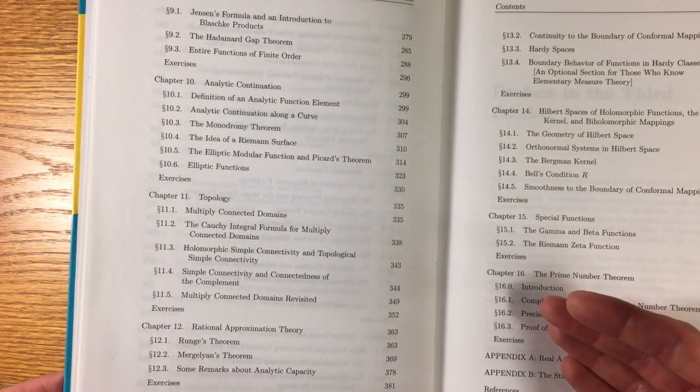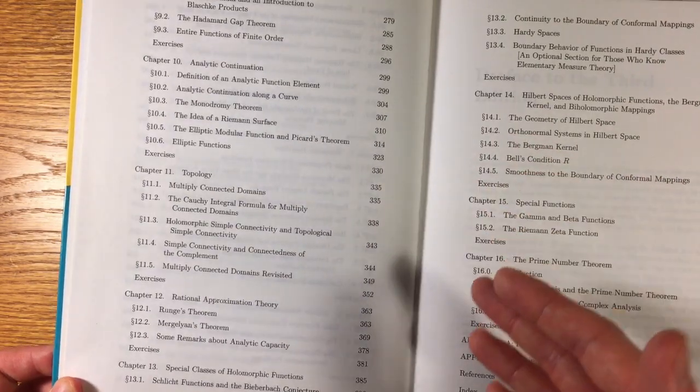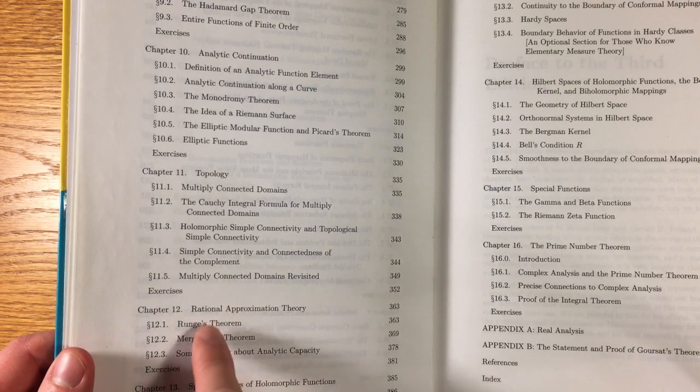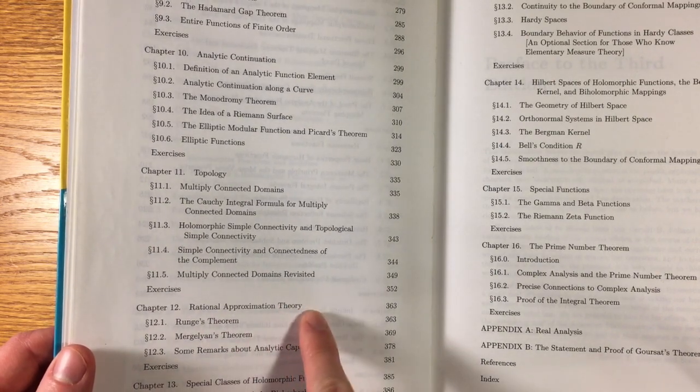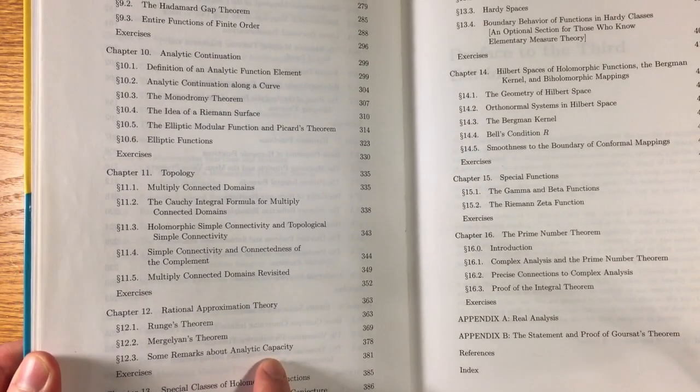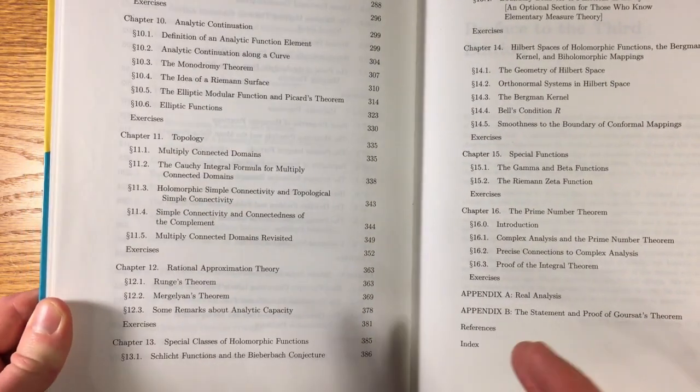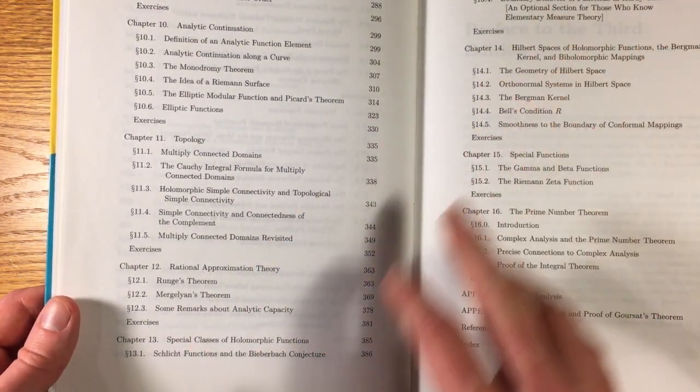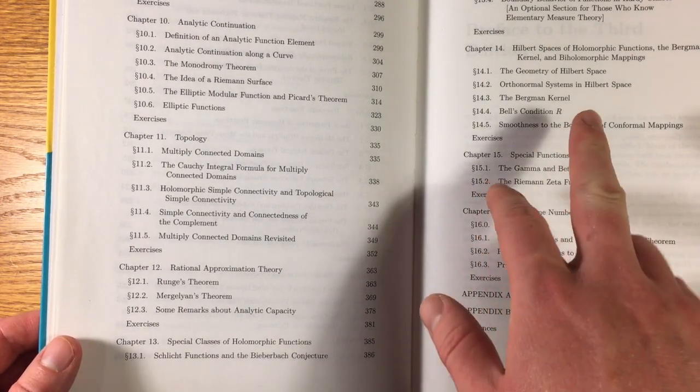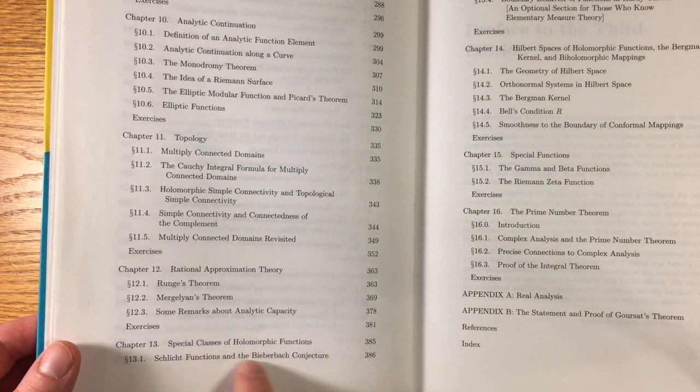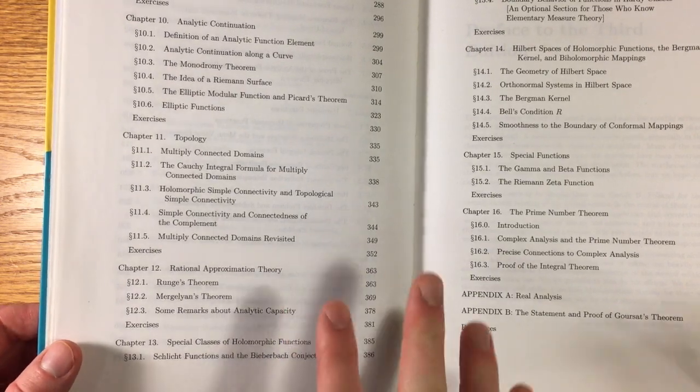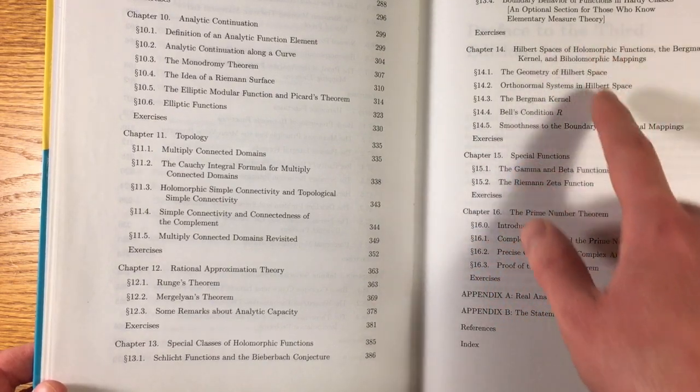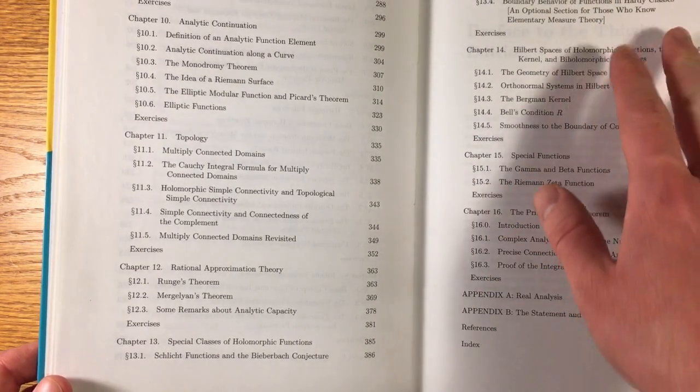The rest of the chapters are introductions to further topics and applications according to the authors' preferences. There's a nice chapter on the theoretical results about approximation by rational functions in the plane, and at least there is the definition of capacity, which I think is nice to see in a first course in complex analysis. Then chapters 13 and 14 are about what you can say about special classes and spaces of functions. Very good stuff.